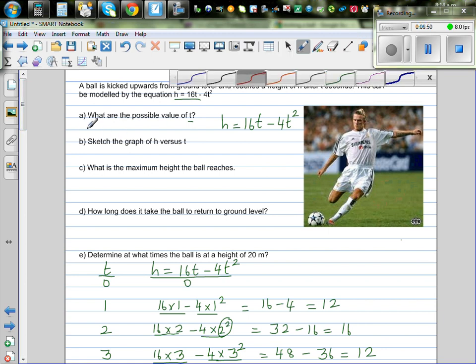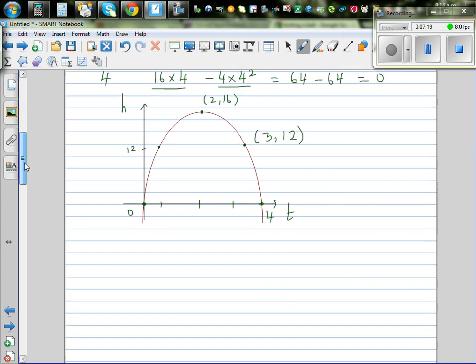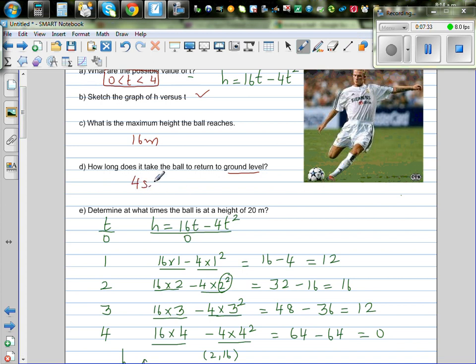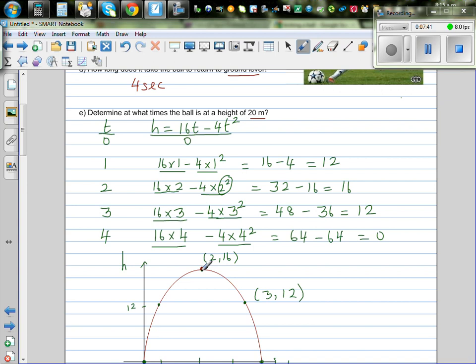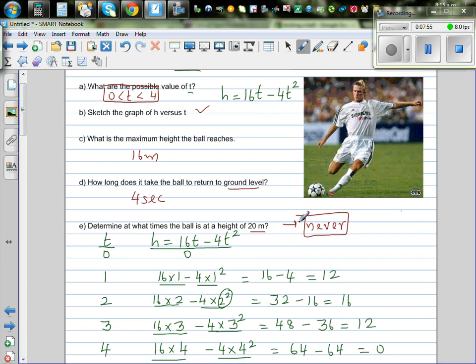So what are the possible values of t. So t is between. This is how you can write. T should be between 4 and 0. T can take any value between 0 and 4. Sketch the graph of h versus t. We have done that. What's the maximum height the ball reaches? It is 16 meters. How long does it take the ball to return to the ground? So look at the graph and tell me. How long does the ball remain on air. After how many seconds it hits the ground. So well 4 seconds. So this is 4 seconds. And determine at which time the ball reaches 20 meters. Is the ball ever reaching 20 meters? This is the maximum height. It reaches after 2 seconds. So we can say it reaches 20 meters never. It can never reach 20 meters. If it has this equation. In this situation it never reaches 20 meters.